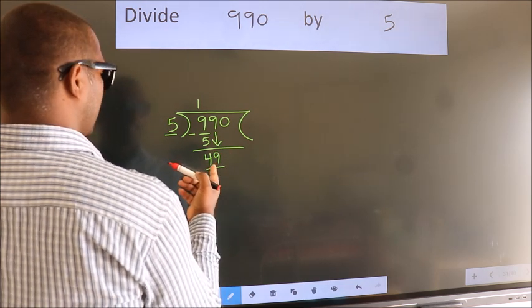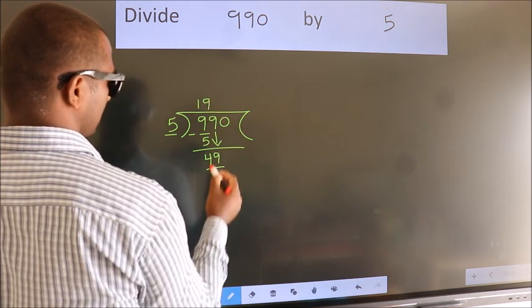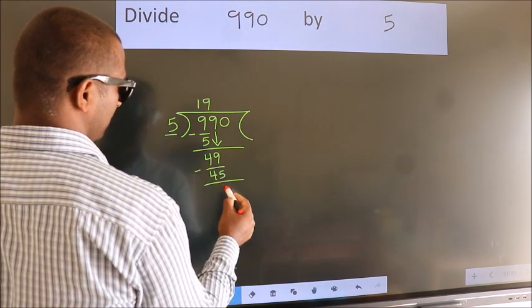A number close to 49 in 5 table is 5 nines 45. Now we subtract. We get 4.